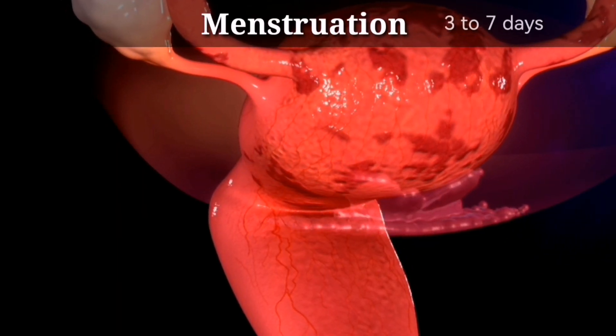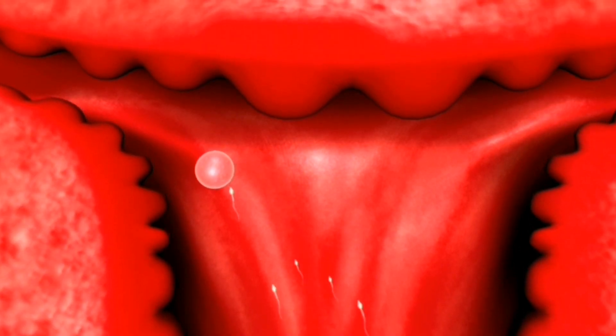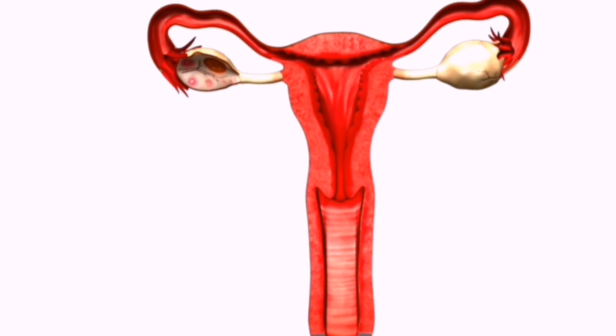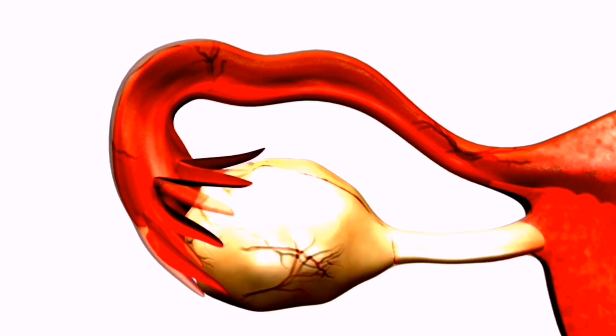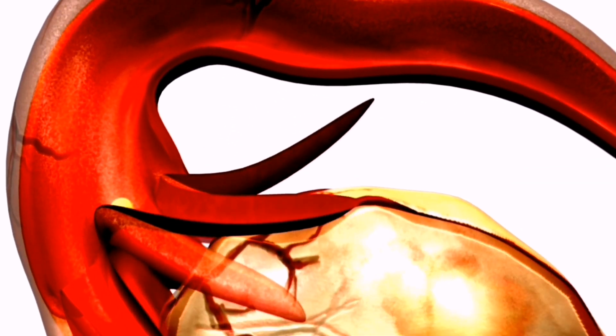So that's a brief overview of the menstrual cycle. It's a natural process that occurs in the female body and it's essential for fertility and reproduction. I hope you found this video informative and if you have any questions or comments please feel free to leave them down below. Don't forget to hit that like button and subscribe for more content like this. Thanks for watching and I will see you in the next one.